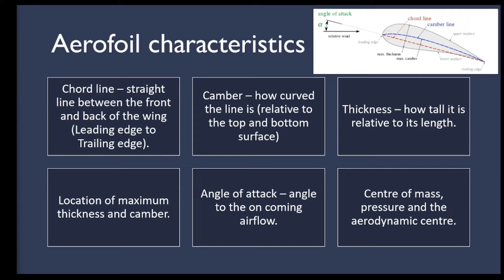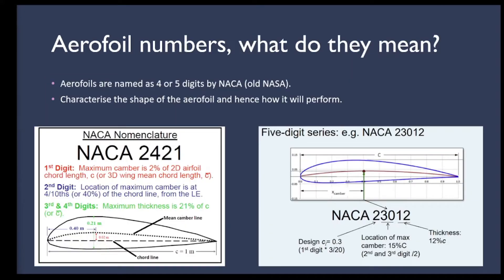We'll deal with CG at a later stage in development — once you've designed the wing and chosen your airfoil, your BMFA leaders will explain further. Regarding airfoil numbers — these are how airfoils are characterized and defined. There are a few different notations; the ones we'll use most are 4-digit and 5-digit NACA airfoils.